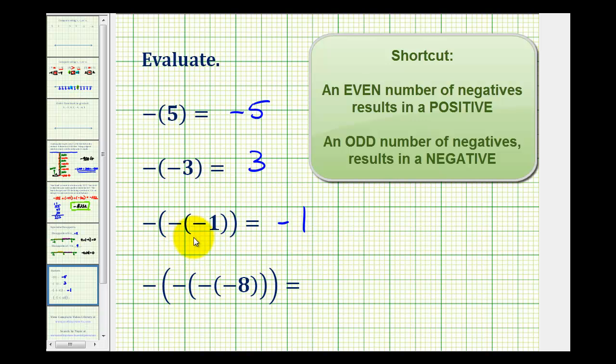But as there are more and more negatives, the shortcut is very handy. So for this last one, we have 1, 2, 3, 4 negatives. Well, 4 is even, so we know the result here will be positive 8.